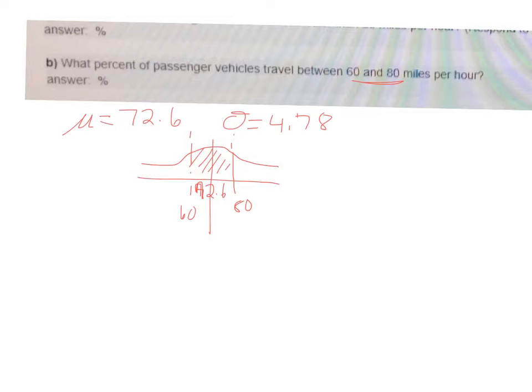So this is going to require two Z scores. If you start with a Z score for the 80, then you would set it up like this.